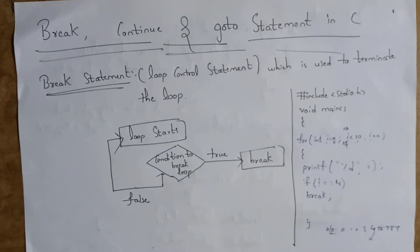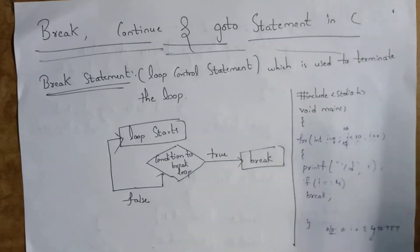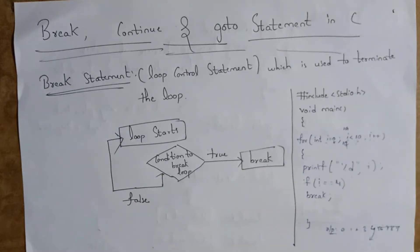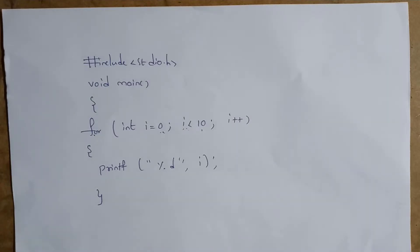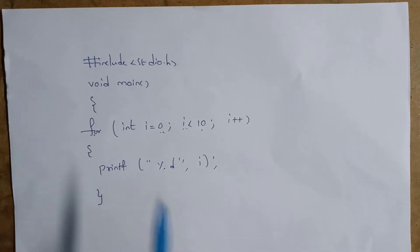Let's get started. First I will explain what a break statement is. The break statement is a loop control statement — that means if you want to break any loop, you need to use this break statement. I will give one example so you can clearly understand. I am using the break statement inside a for loop. I want to print numbers from 0 to 9, so I took a for loop.